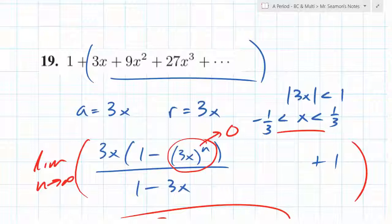You could have just said a is 1 and used the formula directly. You're absolutely right — this approach works, but you don't need to use the longer method from the previous example. You could write it a bit more cleanly. Yes, correct — it's asking you for what values, but you could write it more cleanly.